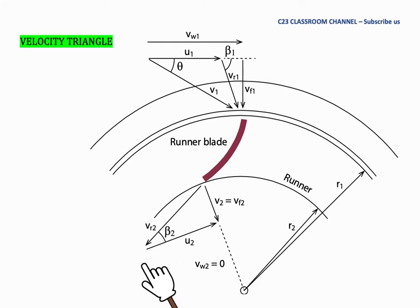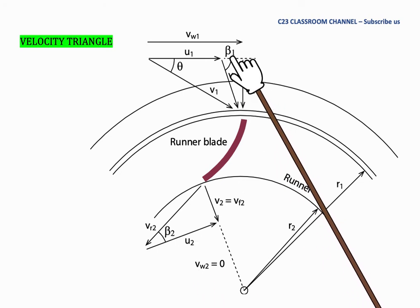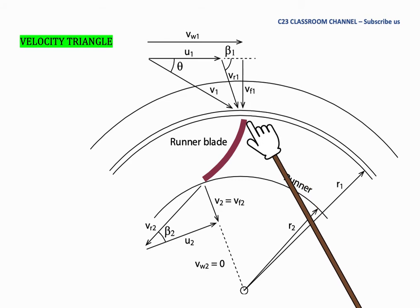And then we can assume that the blade angle at the inlet is beta 1 like this, in this location. And at the outlet here, we have beta 2 at this location.